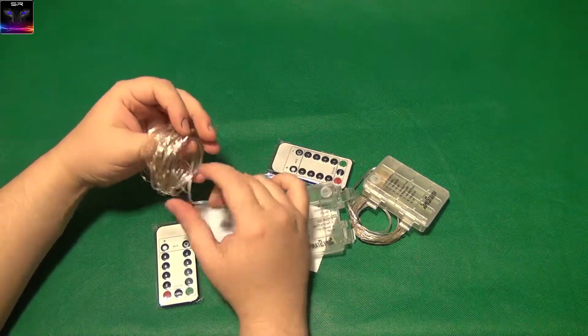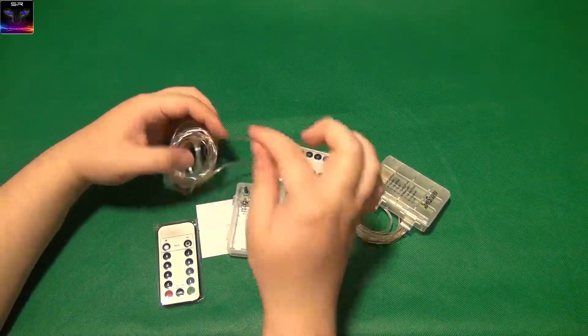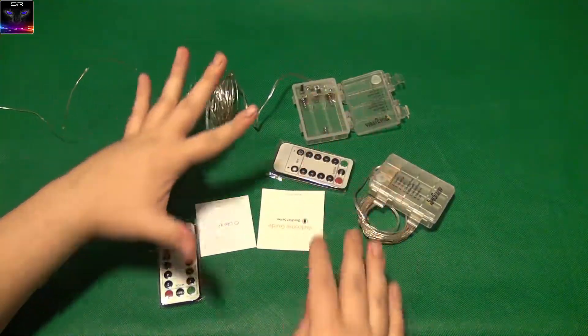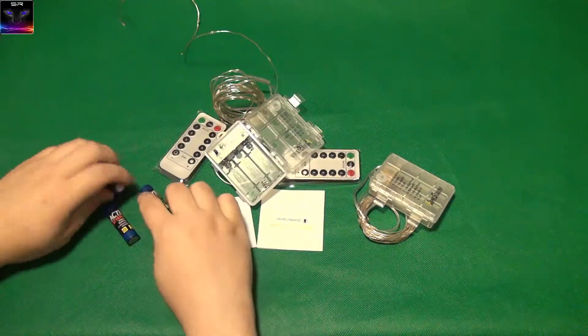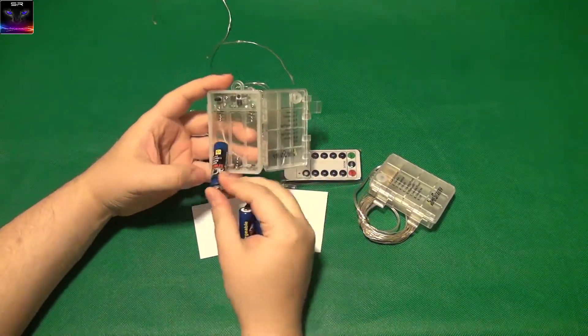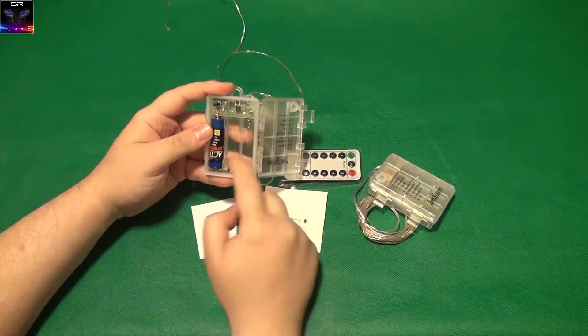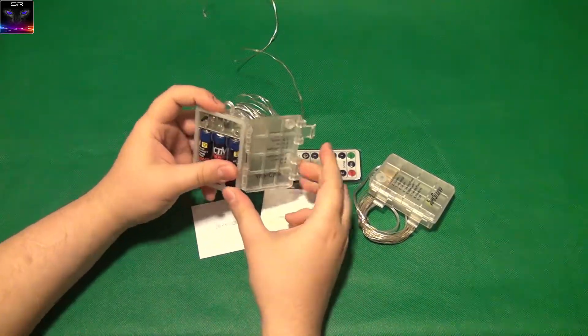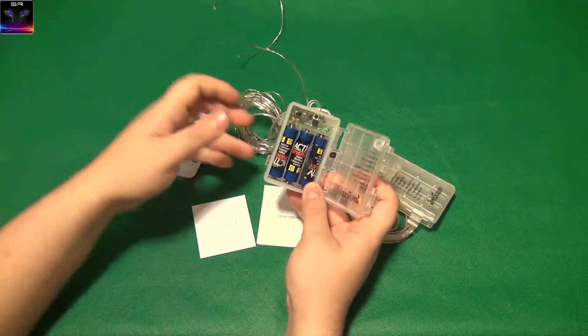I'll see if I can find some batteries and demonstrate how they work. All right, I got some batteries here. You got double A's, that's what they take. Obviously this is how the batteries go. It does say plus and minus, but I mean that's kids play.